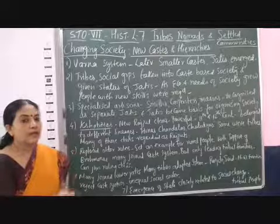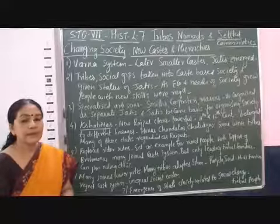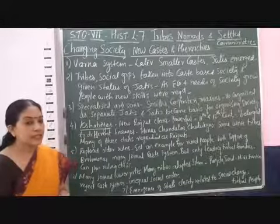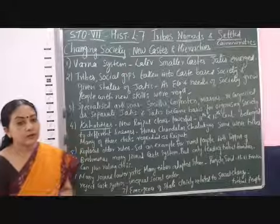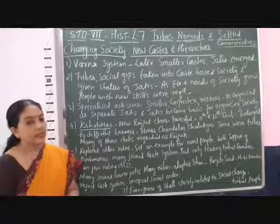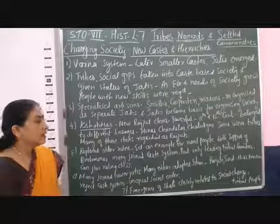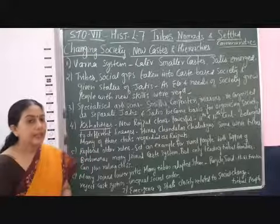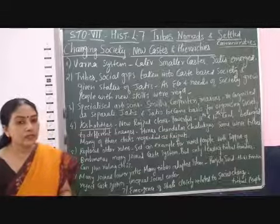Apart from that, many new castes and new Jatis appeared among the Brahmanas as well. Among Kshatriyas also, many changes occurred — new Rajput clans started to emerge and become powerful. In the 11th and 12th centuries, many Rajput clans became very powerful, such as the Minas, Chandelas, and Chalukyas.